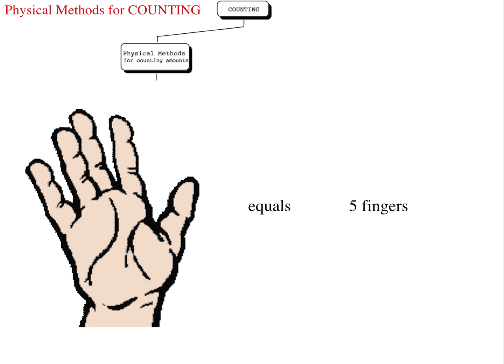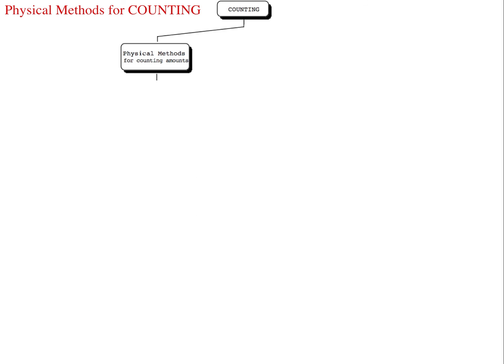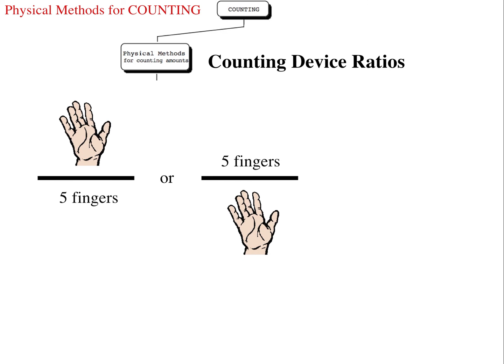Here I have a hand with five fingers. One hand equals five fingers. We can write that as a ratio. The ratio can be written as one hand per five fingers or five fingers per one hand. Again, these are counting device ratios.